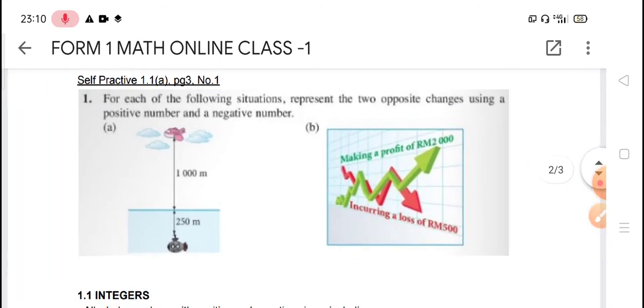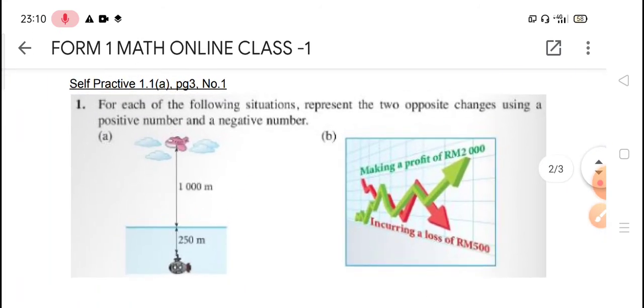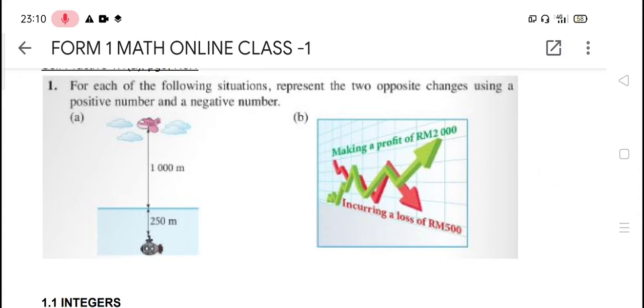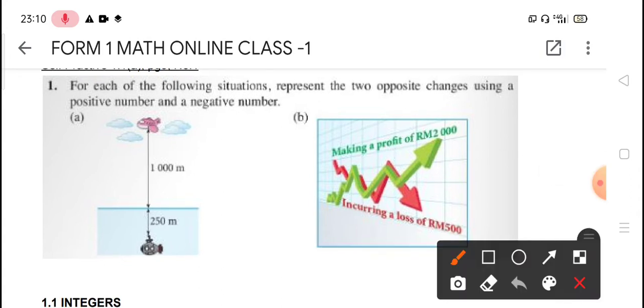So class once again, I remind you during when you go through this video, please use your red pen to do checking and also to do correction if you did mistake. Now we move on. Self-practice 1.1a from your textbook, page three number one. For each situation, each situation represents two opposite changes using positive and negative numbers. The mistake I found is many students forgot to answer this question.